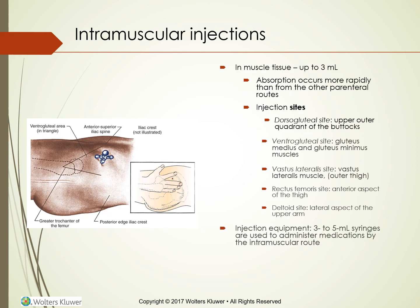Intramuscular injections go into muscle tissue — up to three milliliters at a time. Absorption occurs more rapidly than from other parenteral routes. Injection sites include: the dorsal gluteal site (upper outer quadrant of the buttocks), the ventral gluteal site (gluteus medius and minimus muscles), the vastus lateralis site (outer thigh), the rectus femoris site (anterior thigh), and the deltoid site (lateral upper arm). Equipment is a three to five milliliter syringe.